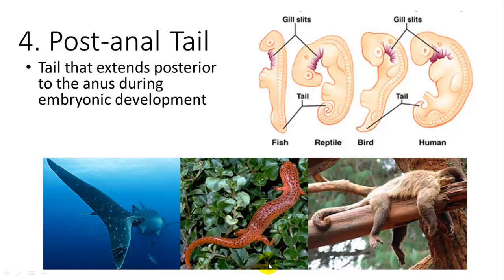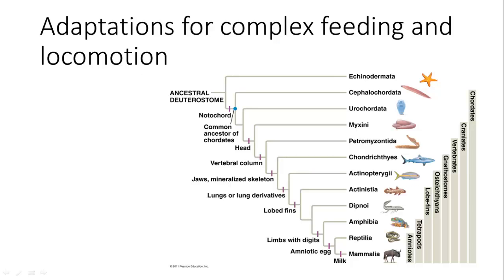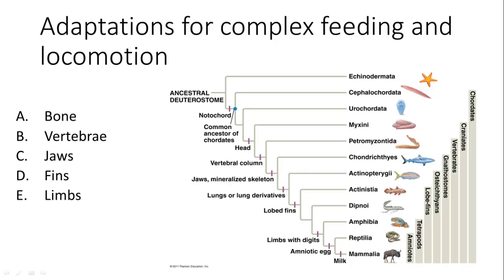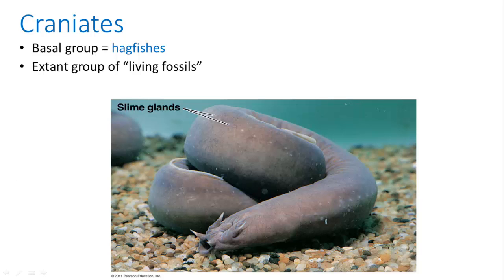The post-anal tail can be seen developing embryonically and is retained in many species such as monkeys, salamanders, and sharks. All of these adaptations seen on the phylogeny are important for a variety of feeding and movement adaptations. The prominent ones include bone, vertebrae, jaws, fins, and limbs. Then we have more derived ones — the amniotic egg and milk — which relate to reproduction rather than feeding and locomotion.